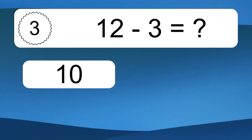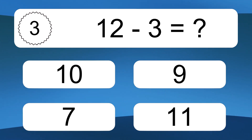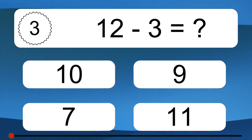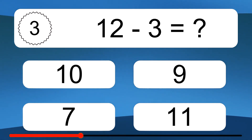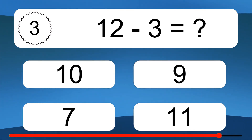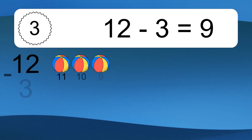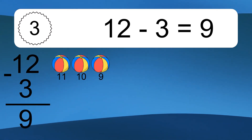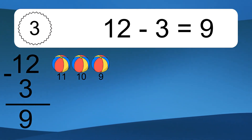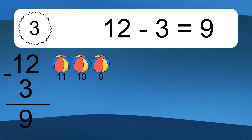12 minus 3 equals what? 12 minus 3 equals 9. Let's count it: 11, 10, 9.